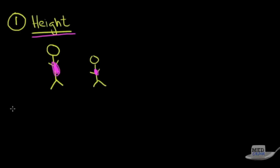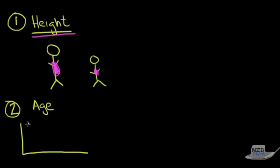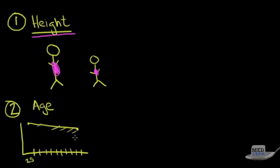Number two is age. When you hit age 25, that's the peak of your lung function — the best it will ever be. After that, lung function generally declines even if someone has never smoked. As you get older, lung function continues to decline, and where you are along that curve determines what's considered normal for you. So age is the second variable that goes into the equation.